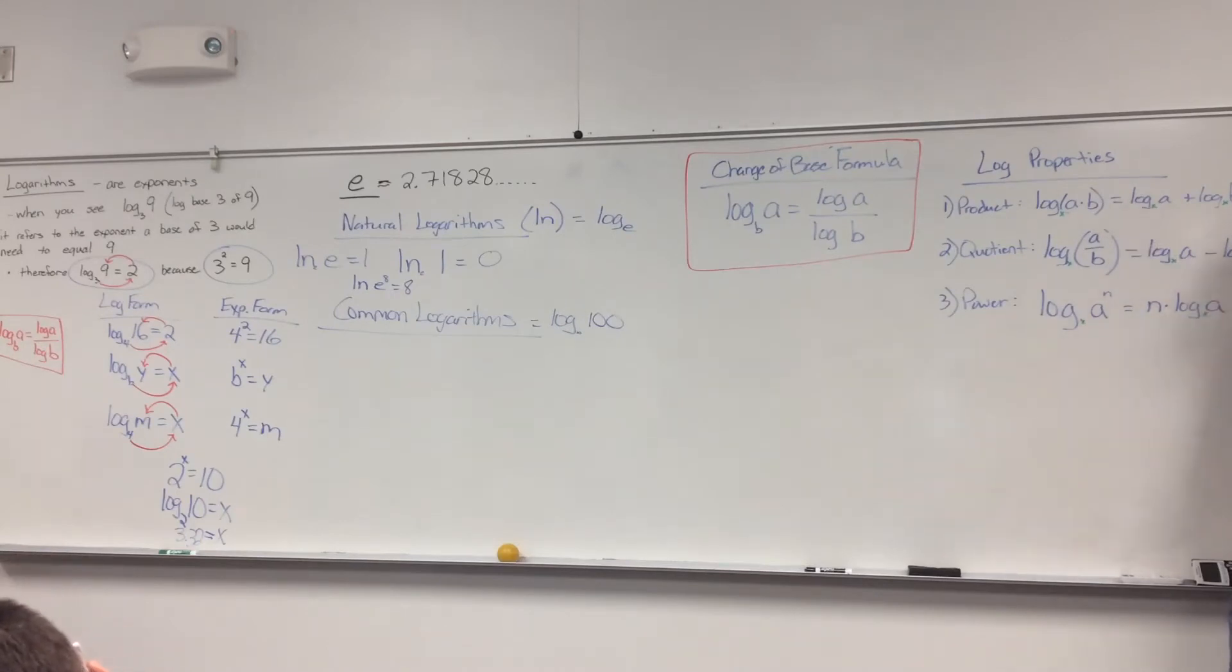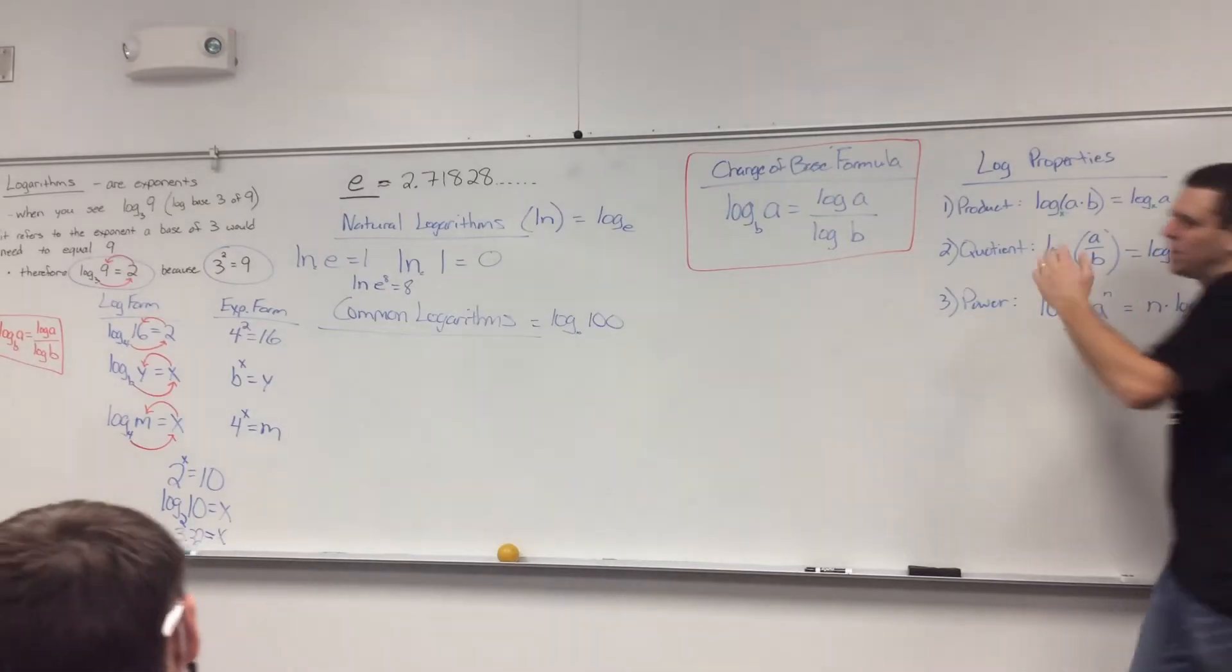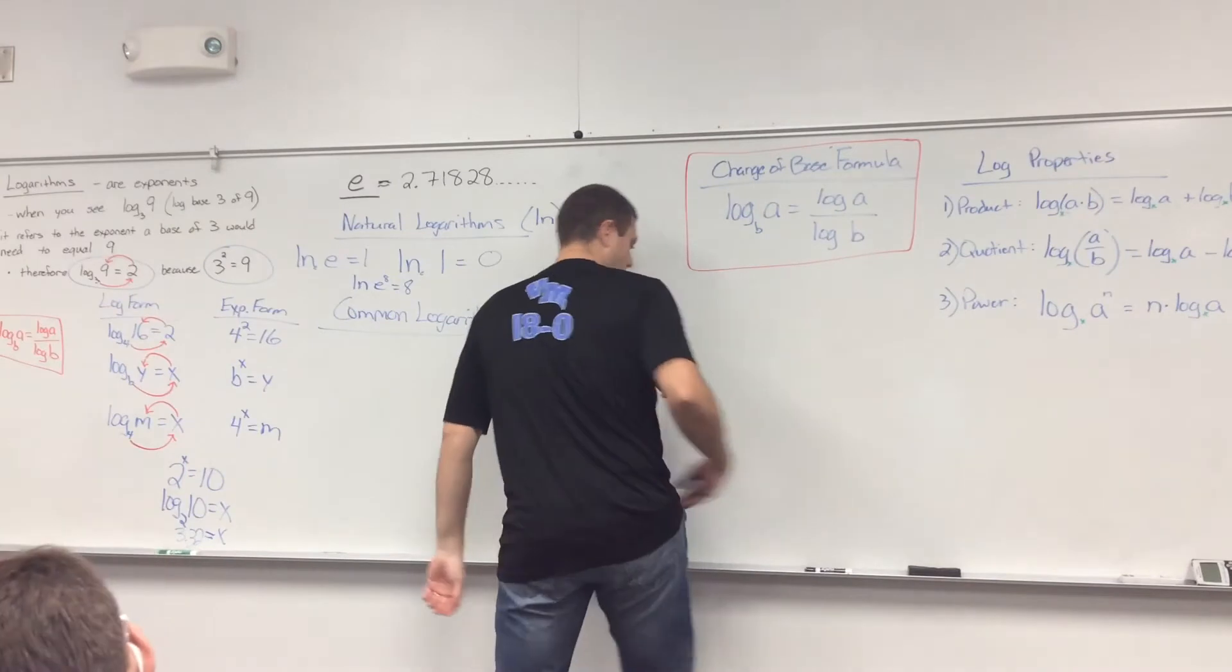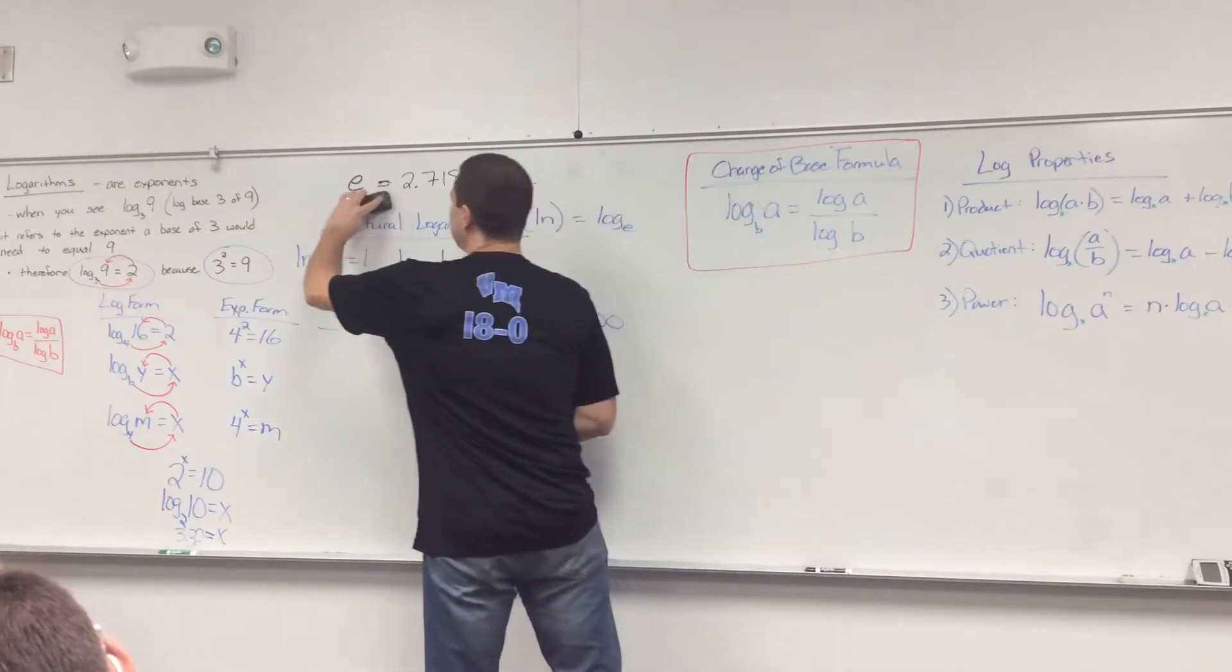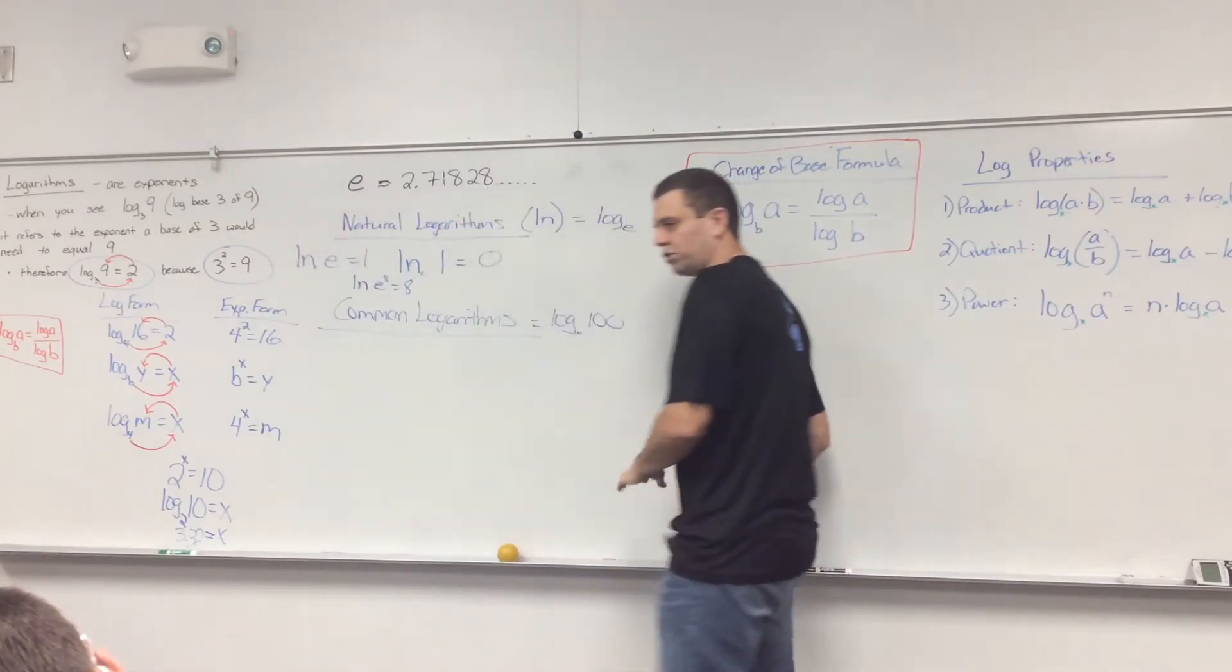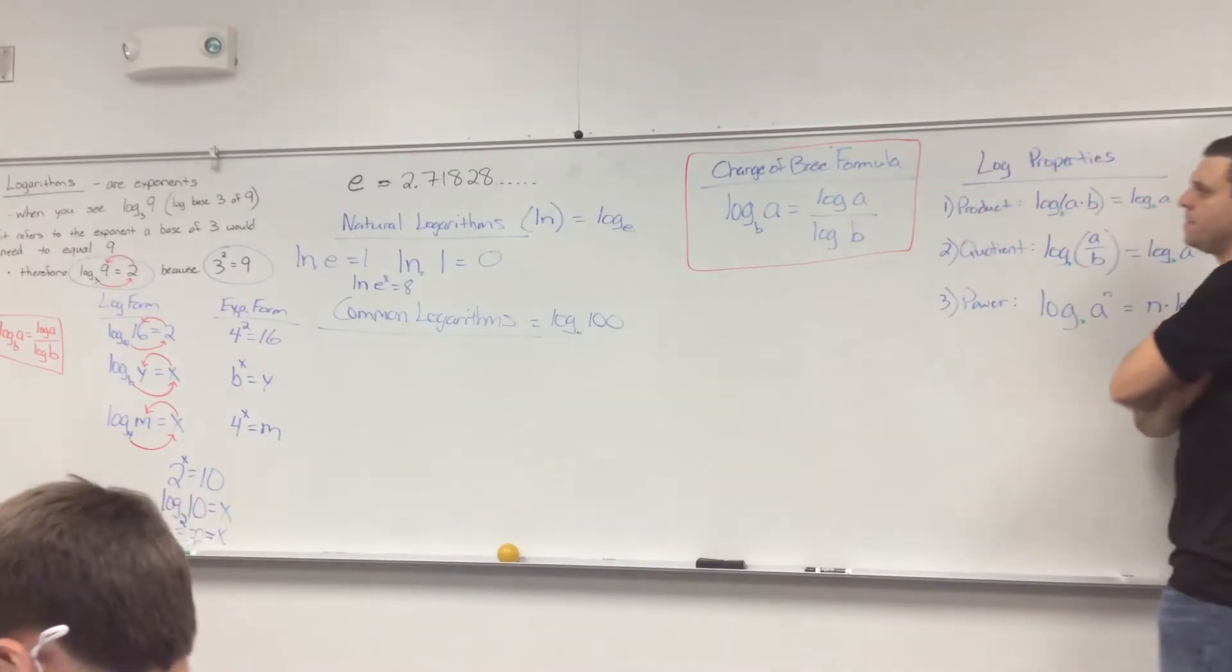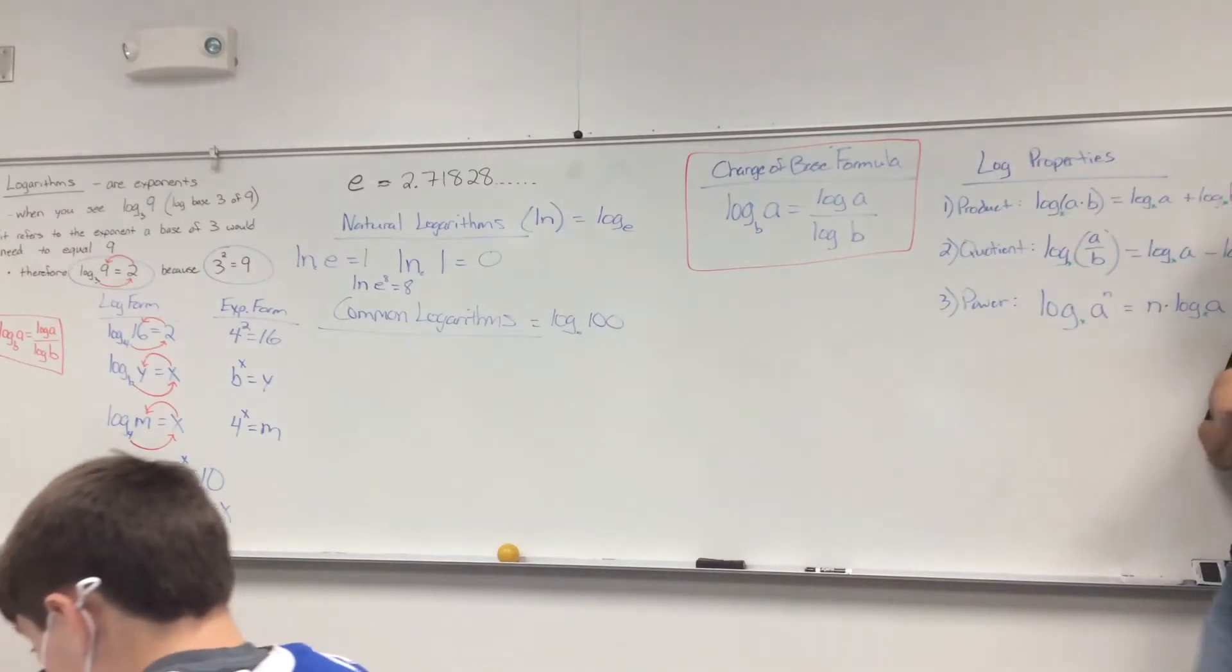Does it need to be underlined? No. Okay, I didn't know what it was. Sorry. You have a good question. Nope, E. So when you see E, E does have a value, just like pi has a value. E is about 2.71828.